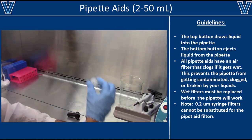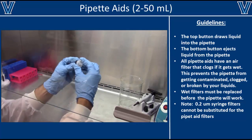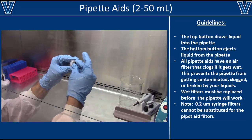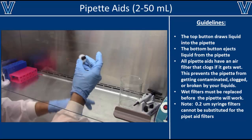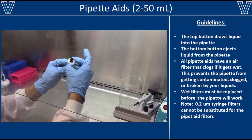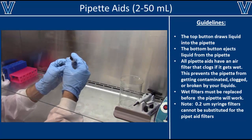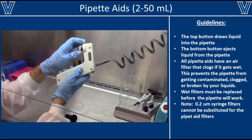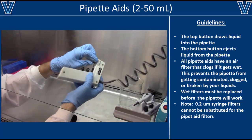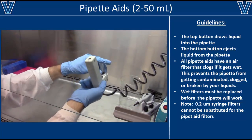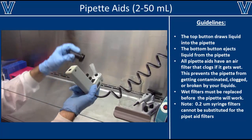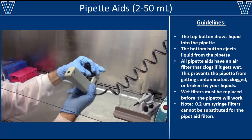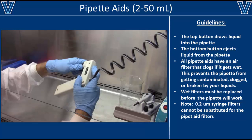Once you have removed the old clogged filter and thoroughly dried all the plastic pieces, reassemble the pipette aid, making sure that the new filter and all the rubber pieces are in the correct orientation. Once you put it back together, test it with some liquid to make sure that it works. If the pipette aid continues to malfunction, let your supervisor know immediately.